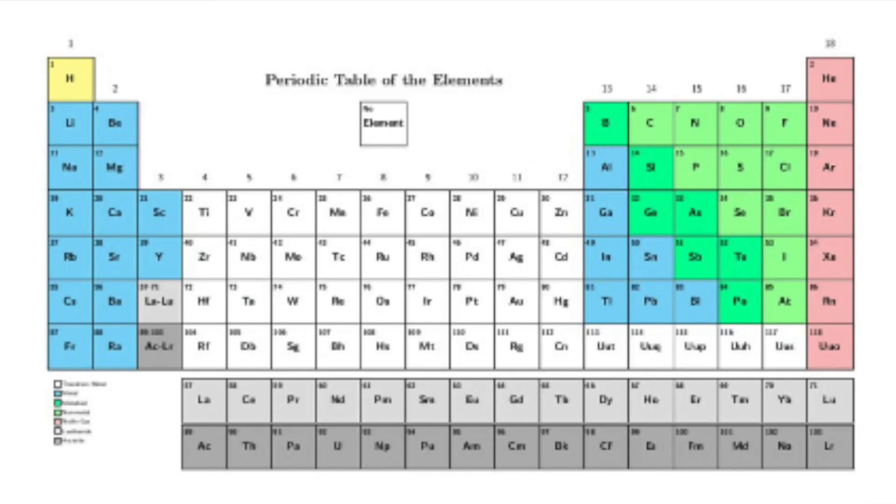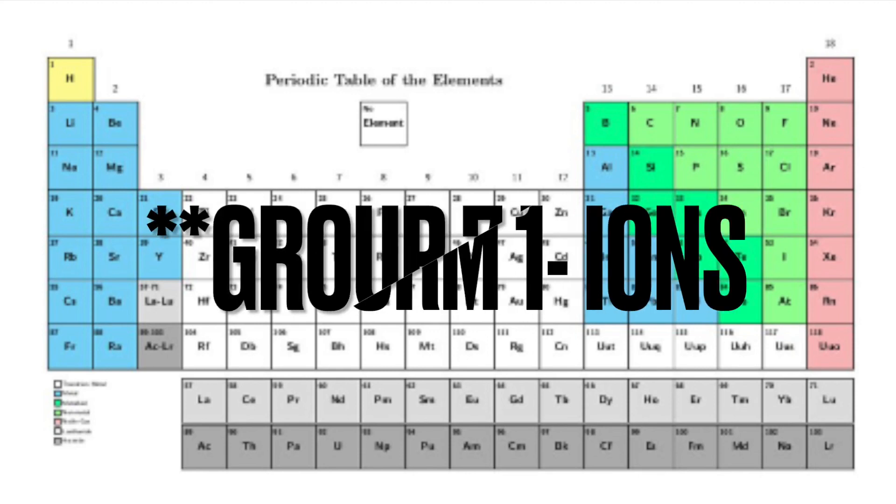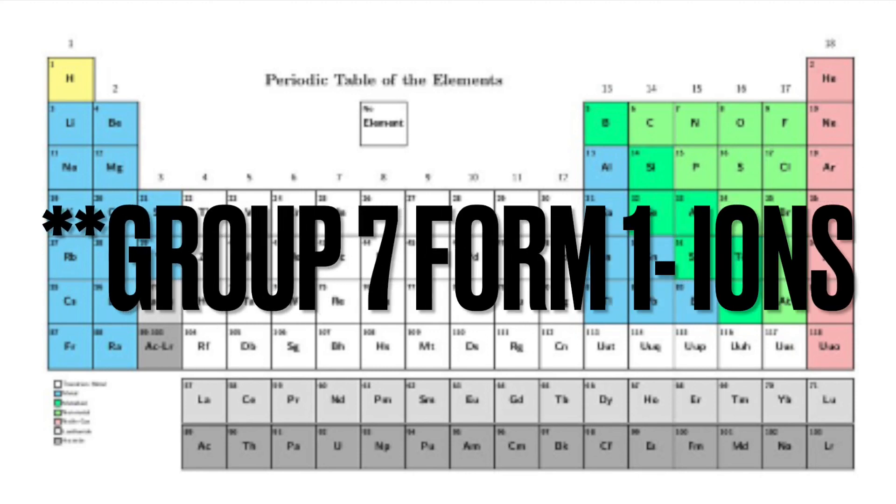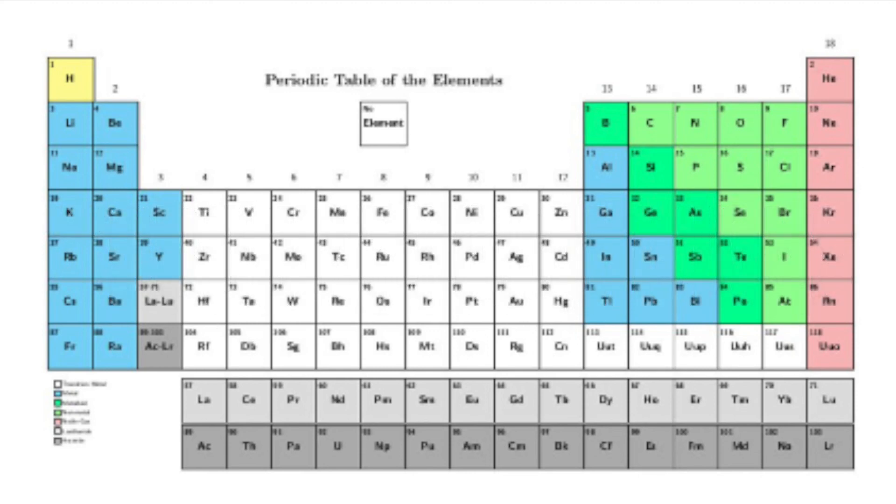So different groups in the periodic table form differently charged ions. For example, group 1 form 1+ ions, group 2 form 2+ ions, group 3 form 3+ ions, group 4 do not form ions. Group 5 form 3- ions, group 6 form 2- ions, group 7 form 1- ions. And group 0, or it may be referred to as group 8, never form ions in compounds.